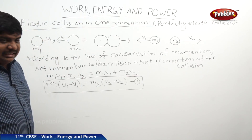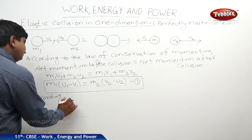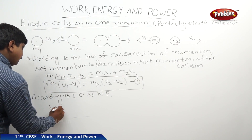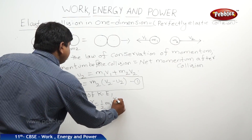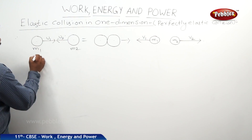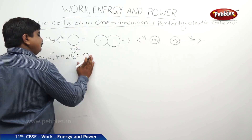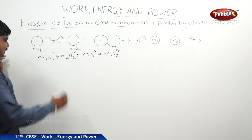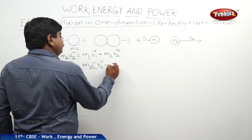Another physical quantity that is conserved in this collision is kinetic energy. According to the law of conservation of kinetic energy, we have: ½m1·u1² + ½m2·u2² = ½m1·v1² + ½m2·v2². Cancelling the common factor of ½ and rearranging, bringing all m1 terms to one side and m2 terms to the other, we get: m1(u1² − v1²) = m2(v2² − u2²). Let us call this Equation 2.